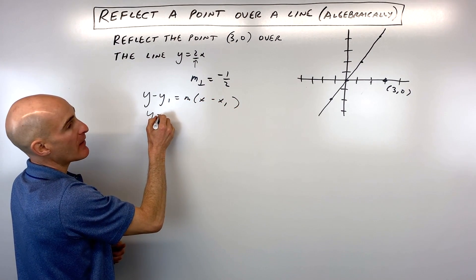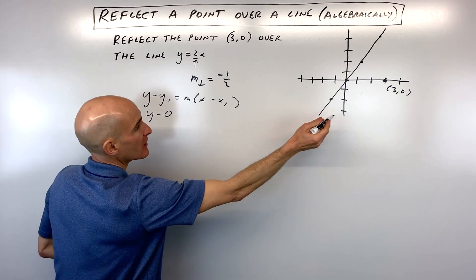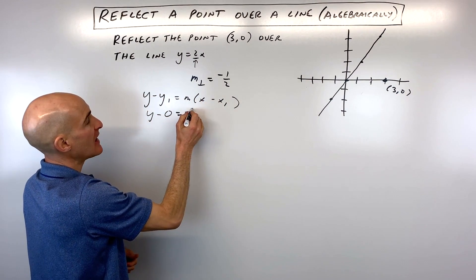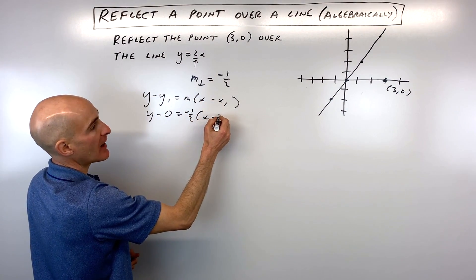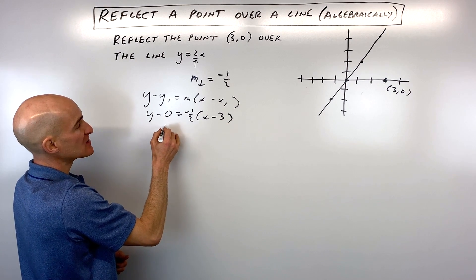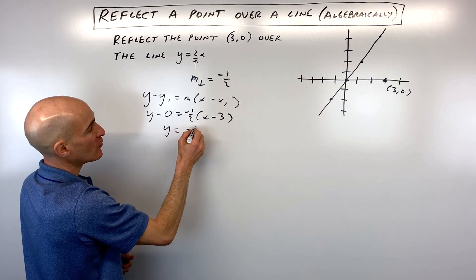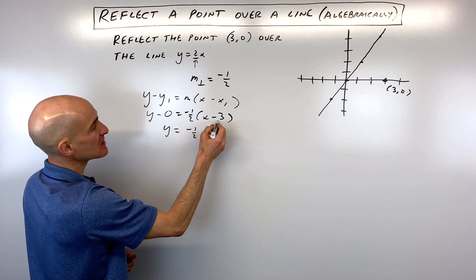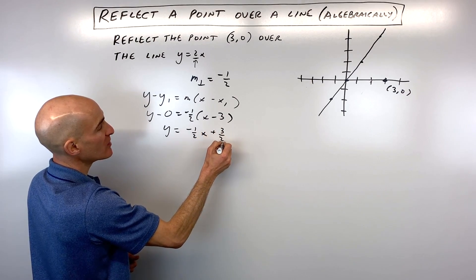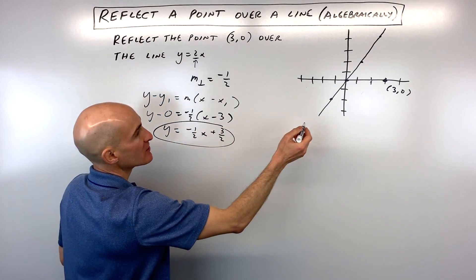This is going to be y minus 0 equals negative 1 half times x minus 3. Y minus 0 is just y, and if we distribute the negative 1 half, we get negative 1 half x plus 3 halves. So that's the equation of this line here.